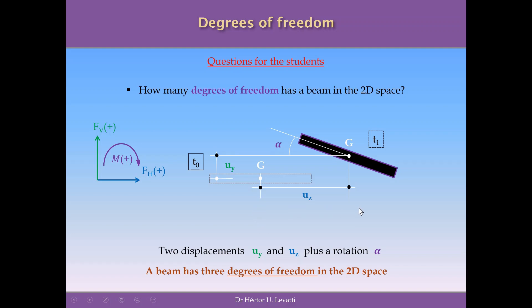To pass from one position to another in the two-dimensional space, we always need to apply three components: displacement in the horizontal direction, displacement in the vertical direction, and rotation around a point. It is important to understand the relation between forces and displacements: horizontal forces produce horizontal displacements, vertical forces produce vertical displacements, and moments produce rotations.